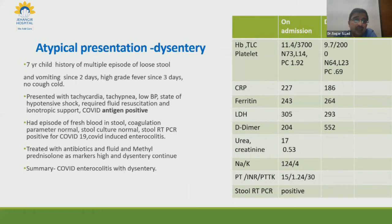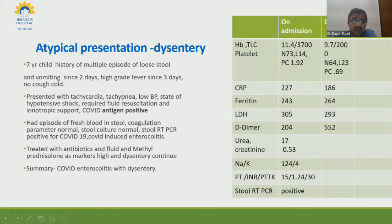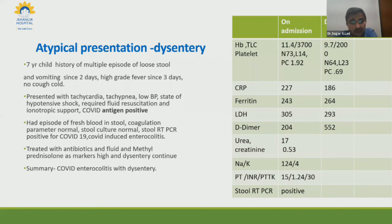The fifth case, seen just three days ago, is a seven-year-old girl with multiple watery stools for two to three days, vomiting for two days, and high-grade fever for three days with no cough or cold. She presented with tachypnea, tachycardia, low blood pressure, and hypotensive shock requiring fluid resuscitation. On admission, COVID antigen was positive. She had fresh blood in the stool. Investigations including coagulation parameters, ultrasound abdomen, and stool culture were normal. Stool RT-PCR for COVID-19 was positive — consistent with COVID-induced enterocolitis.